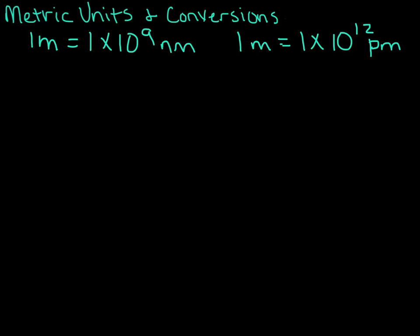As you might expect, these are pretty small units — they're on atomic scale. You may also see this conversion written as 1 meter is equal to 10 to the 9 nanometers, which means the same thing as 1 times 10 to the 9 nanometers, but it's shorter to write and just gives us the exponent. I'm going to write the rest of them that way so you get used to seeing it.